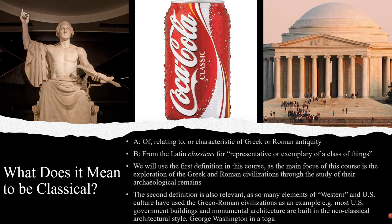First, let's discuss what it means to be Classical. The Oxford English Dictionary uses two definitions for the term Classical. The first is of, relating to, or characteristic of Greek or Roman antiquity. The second definition comes from the Latin word classicus, which means representative or exemplary of a class of things. We're going to use the first definition in this course, as the main focus of this class is the exploration of the Greek and Roman civilizations through the study of their archaeological remains.